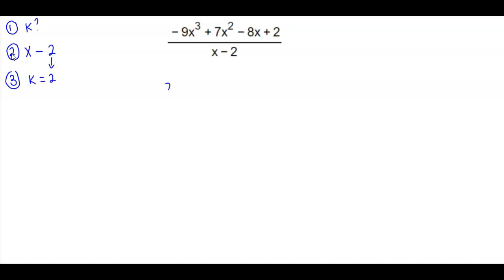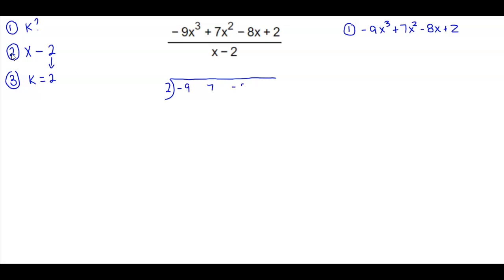So far we have the first part of our synthetic division. Over here we have negative 9x cubed plus 7x squared minus 8x plus 2, representing our dividend, and we want to write them as leading coefficients: negative 9, plus 7, minus 8, and plus 2.